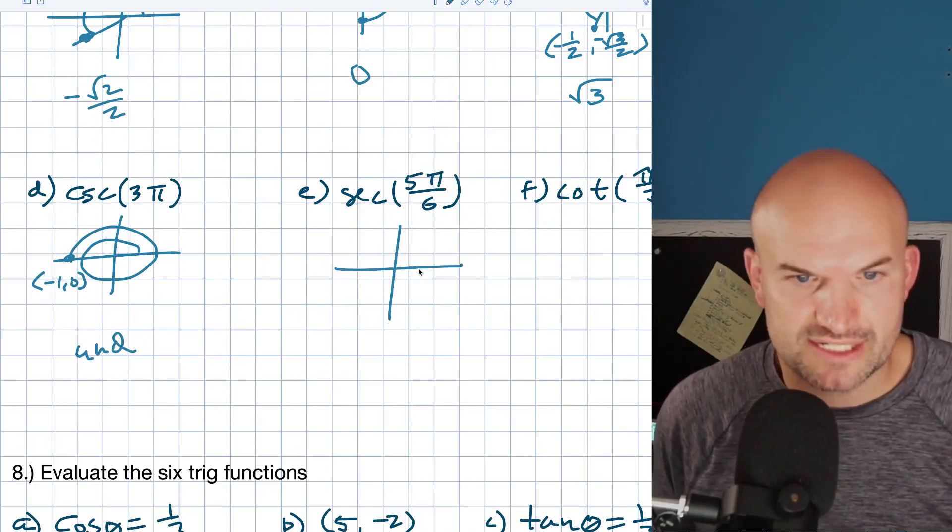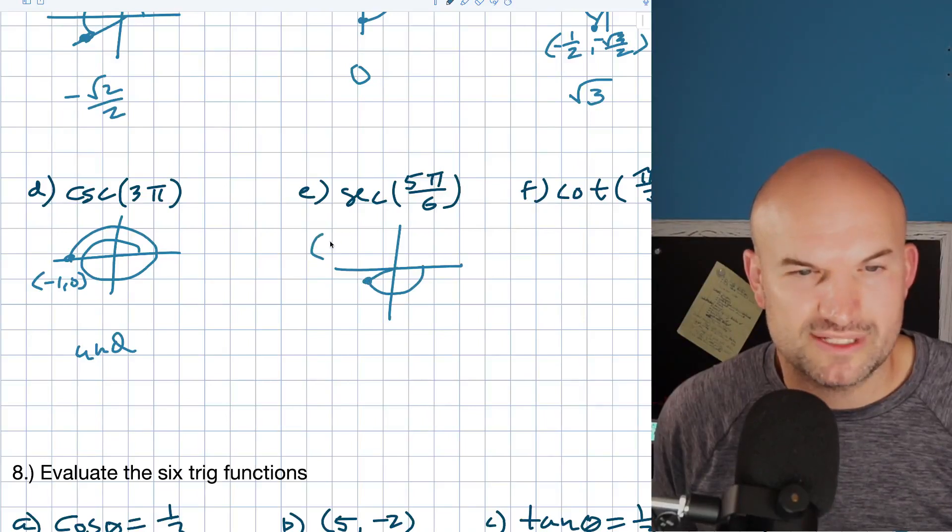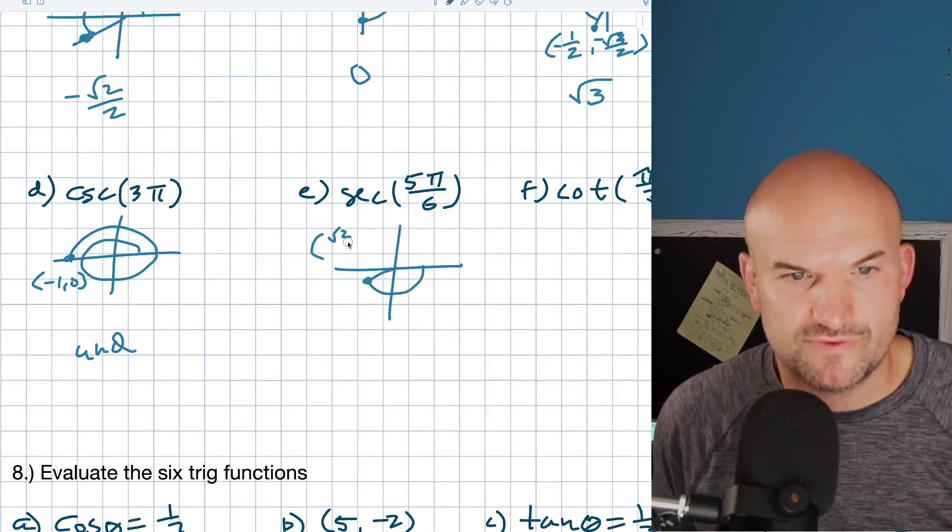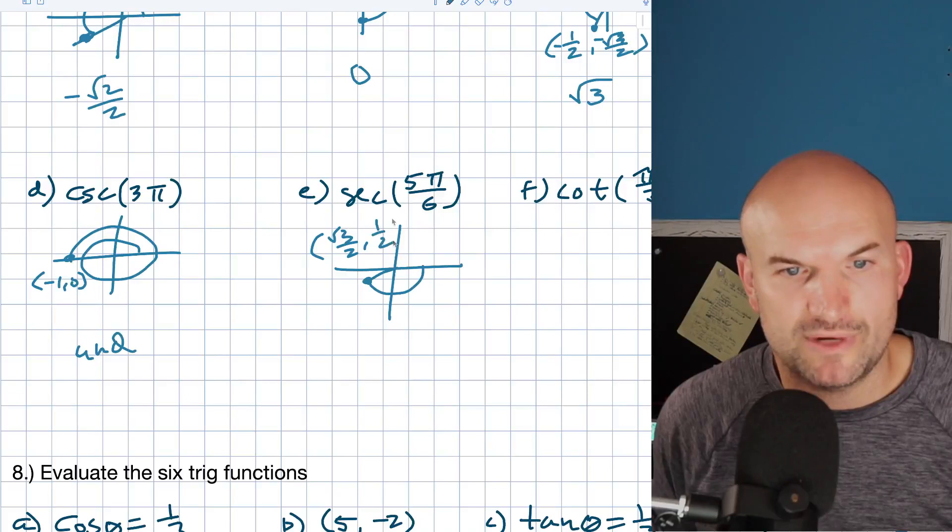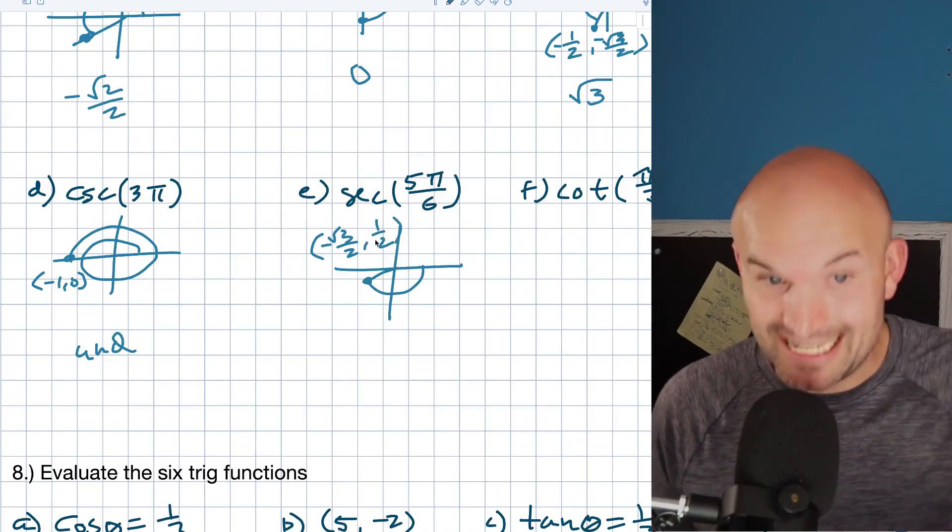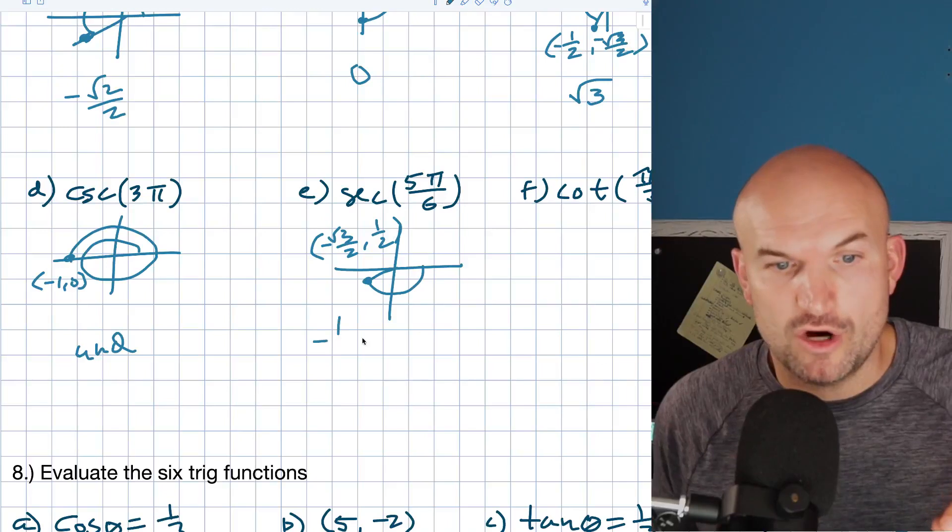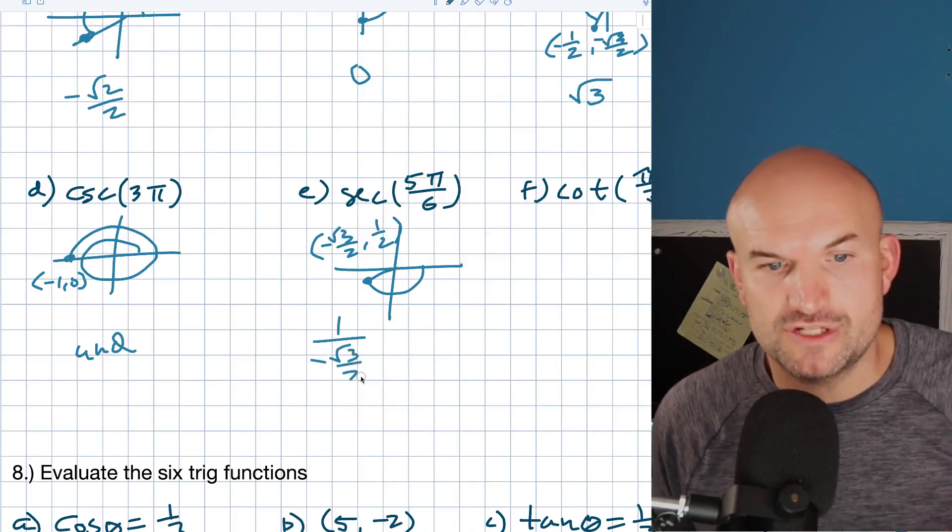Secant of 5π over 6. 5π over 6 is right here. Let's see, what is that coordinate point? I think that coordinate point is going to be a square root of 3 over 2 comma 1 half, but it's in the second quadrant. So, that's a negative.